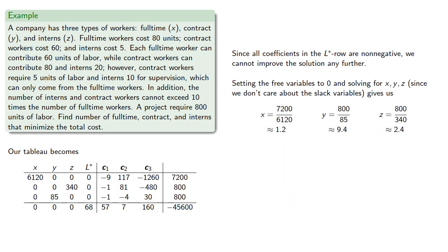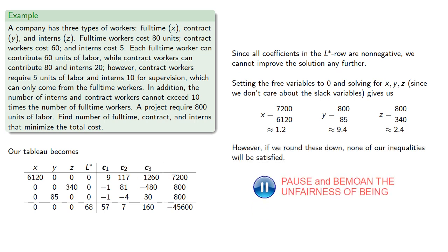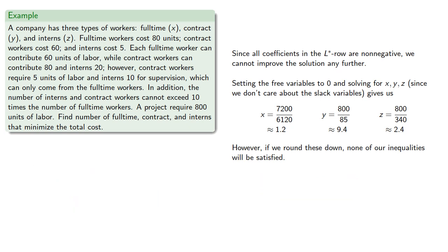Since we can't have a fractional number of workers, we'll have to round these in some fashion. If we round these down, none of our inequalities will be satisfied. And so after playing around with the numbers a little bit, we find an optimal solution will be found by rounding x to 2, and then leaving y at 9, and z at 2, which will incur a total cost of... which will be our minimum cost that also satisfies all of the constraints.